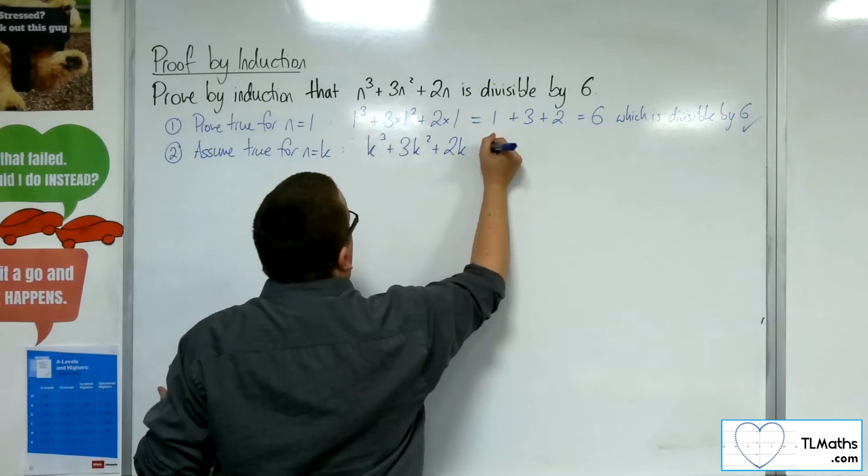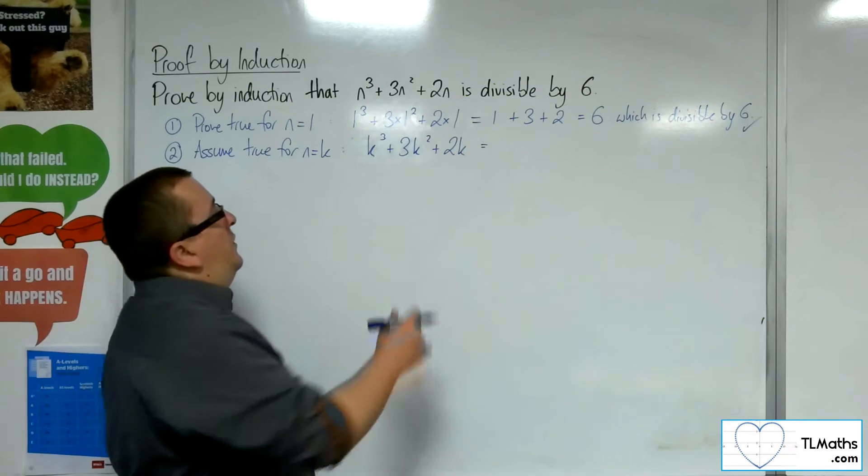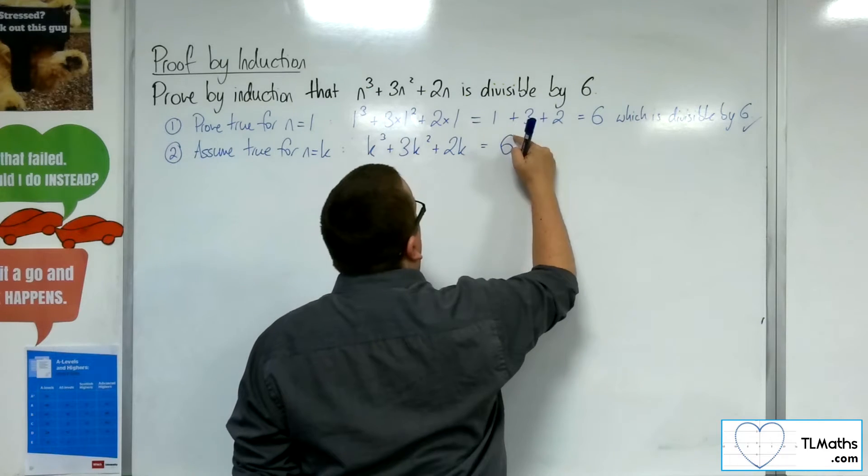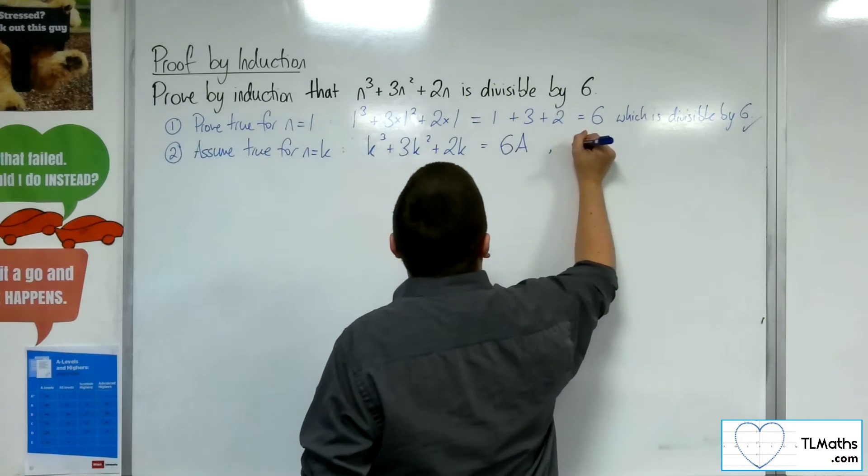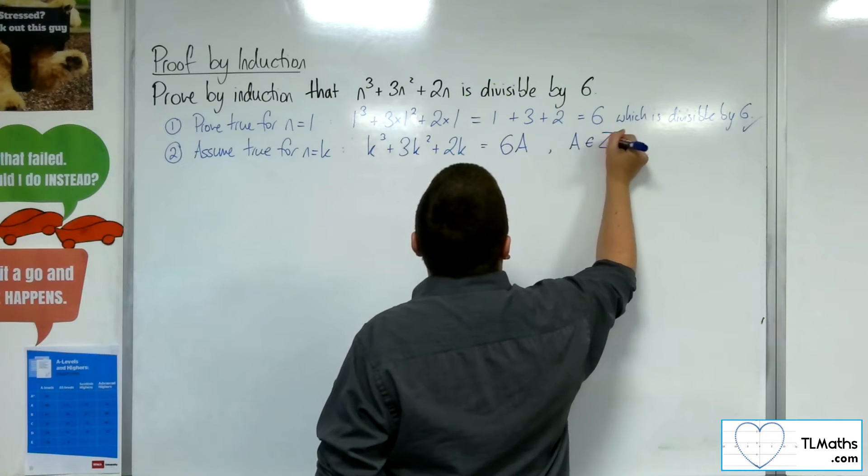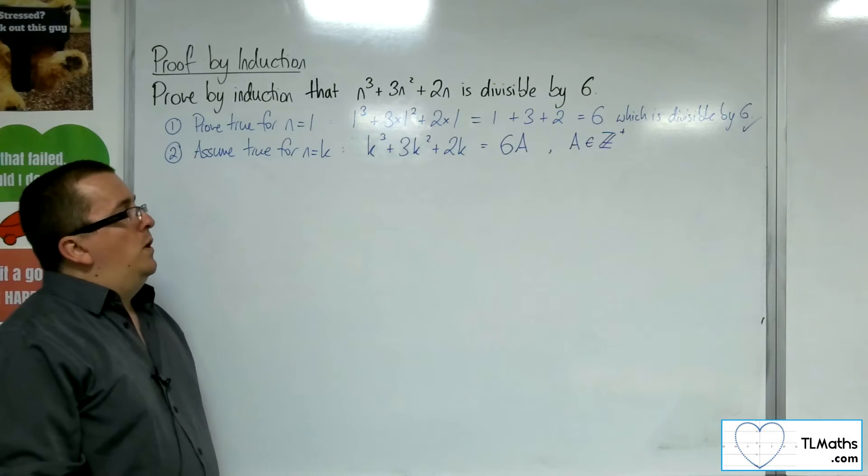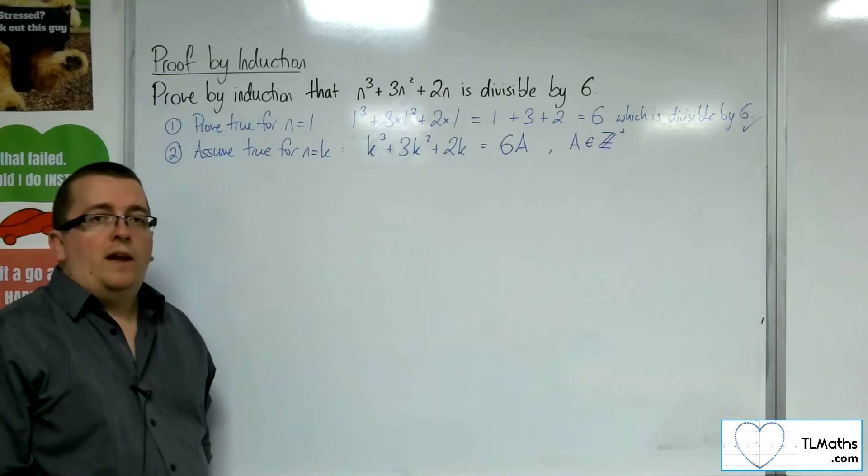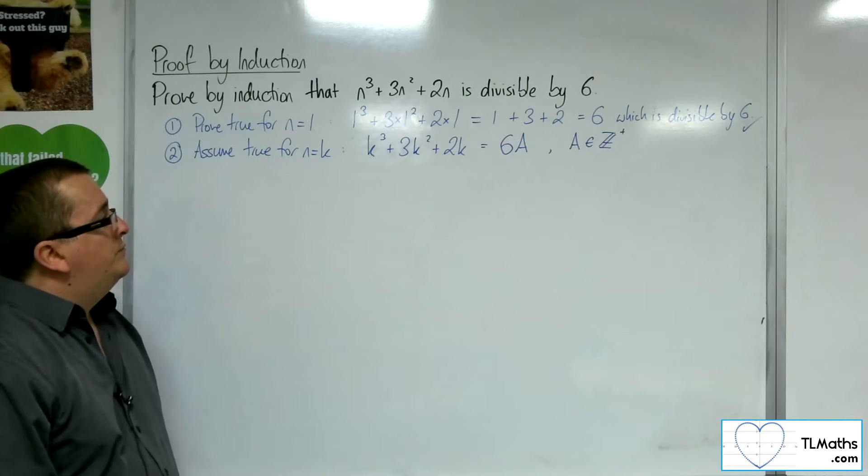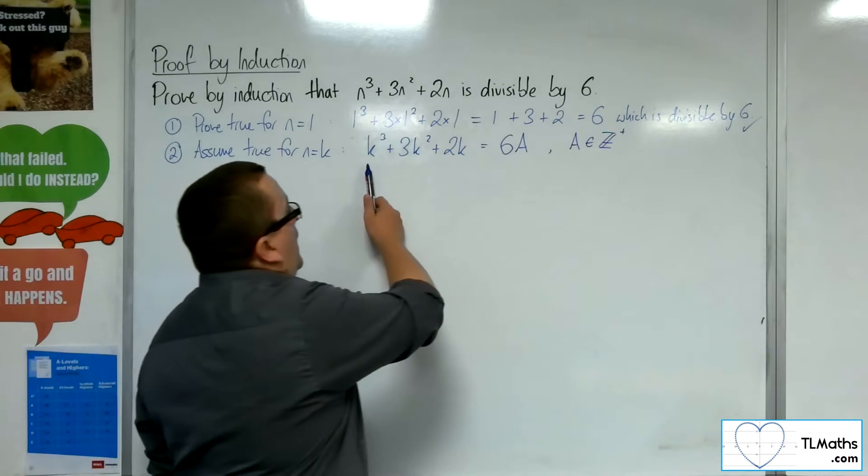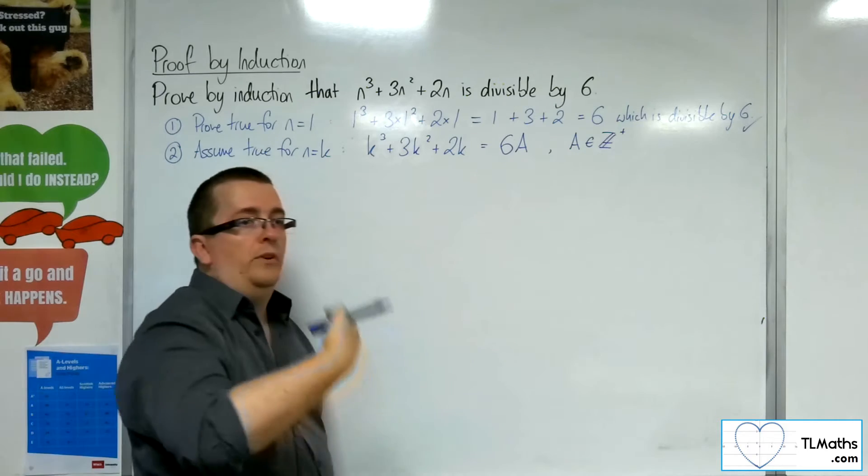And in order to say that it's divisible by 6, what I can say is that this is equal to 6 times some number a, where a is a positive integer. So, in other words, there is some value of a, where a is greater than or equal to 1, and it's an integer.